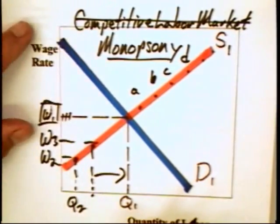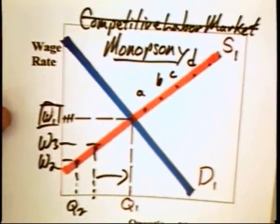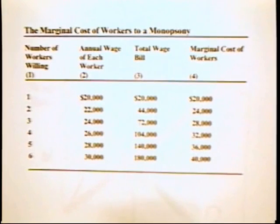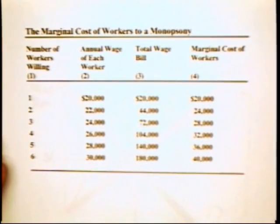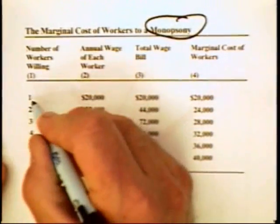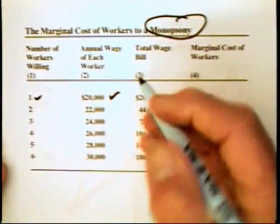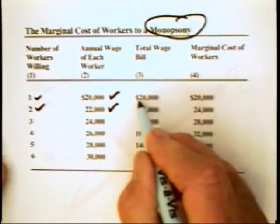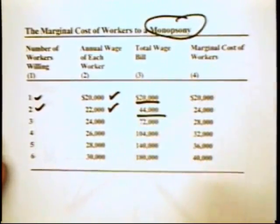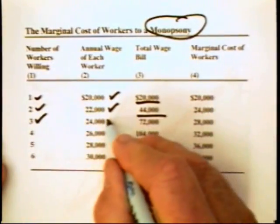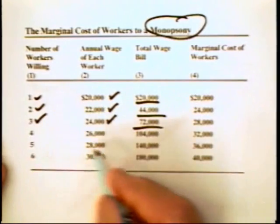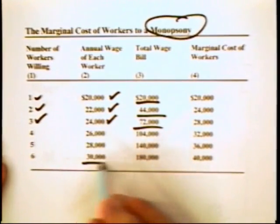If the monopsony must adjust the wage to accommodate its employment demands, then it's going to affect the marginal cost of workers. A monopsony can hire one worker and pay $20,000 a year. If it wants to hire two workers, it must pay each of them $22,000, which means its total wage bill goes from $20,000 for one worker to $44,000 for two workers. It can hire three, but the wage goes up to $24,000 and the total wage bill goes up to $72,000. At six workers, the employer must pay $30,000 in annual wages.